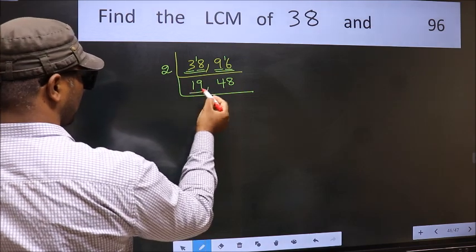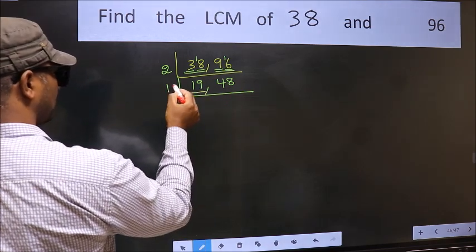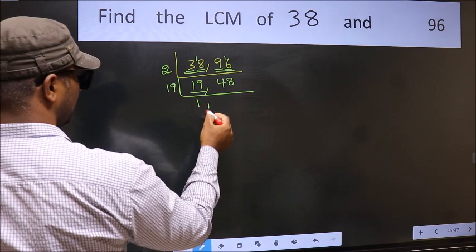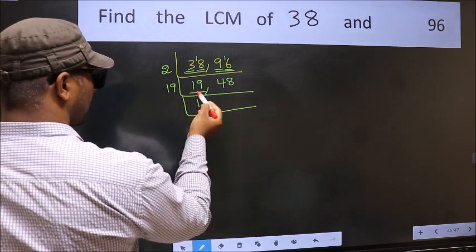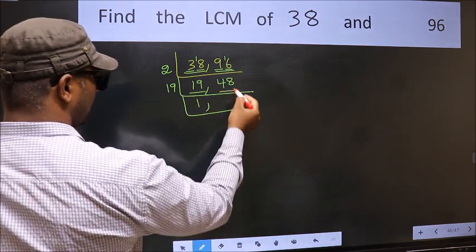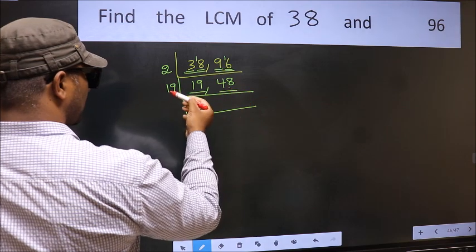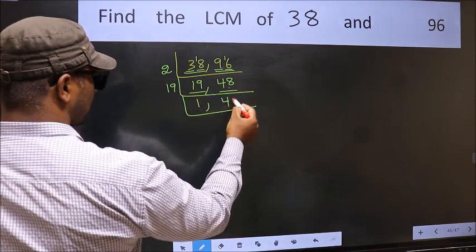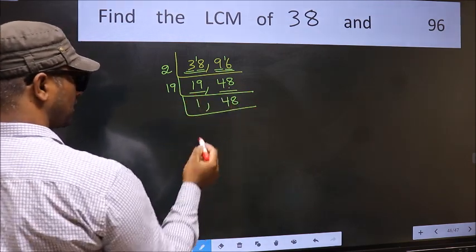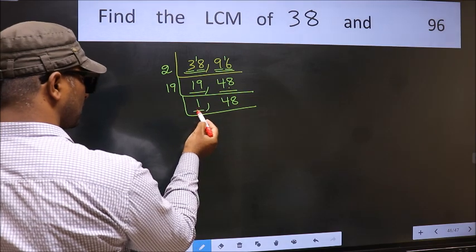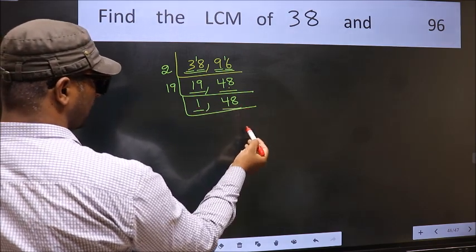Now here we have 19. 19 is a prime number, so 19 ones = 19 — it cannot be divided further. The other number is 48. 48 is not divisible by 19, so we write it down as it is.